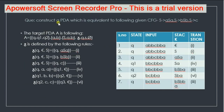Question: Construct a PDA which is equivalent to the following CFG. For constructing a PDA out of a CFG, first of all we will need to define all the tuples of PDA. Then we have to derive all the delta functions according to rule 1 and rule 2. This will help us in making the table.